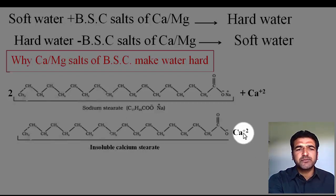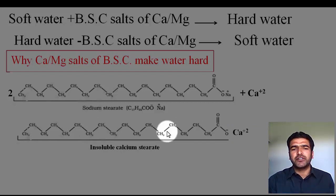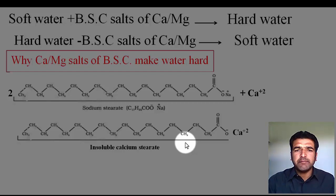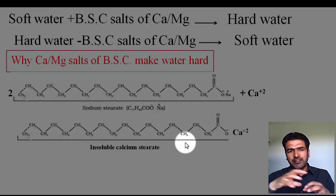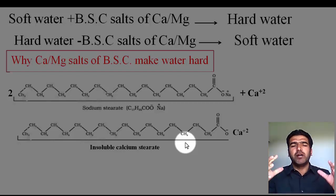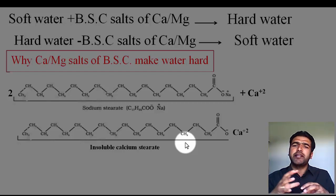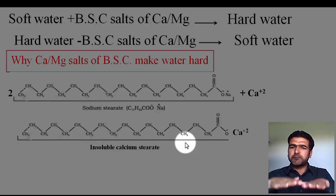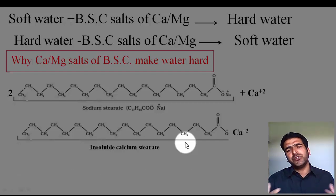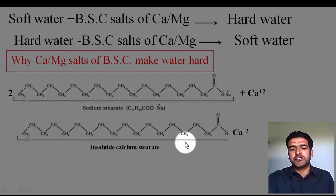What happens is you get the calcium salt of the fatty acid — calcium stearate — and this compound is insoluble in water, so it gets precipitated in the form of scum. Calcium and magnesium ions trap those soap molecules, and once the soap molecules are trapped, that soap is not able to produce foam or lather. Once these soap molecules are trapped by the calcium and magnesium ions, they precipitate as scum. That is why we don't see any foam or lather produced from hard water.